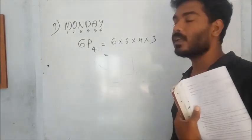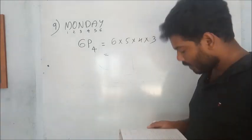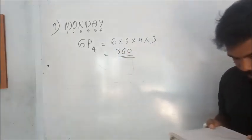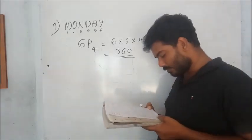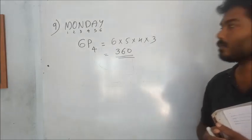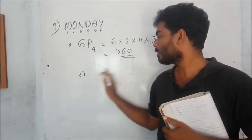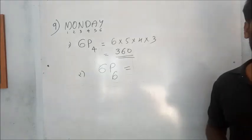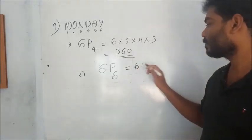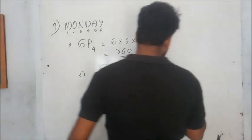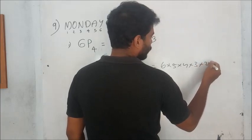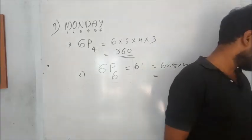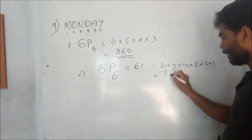Six minus four equals two. The answer comes to: 6 × 5 × 4 × 3 = 360... calculating through: the final answer is seven hundred and twenty.